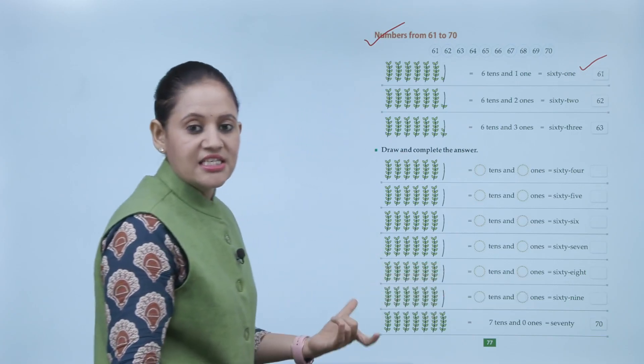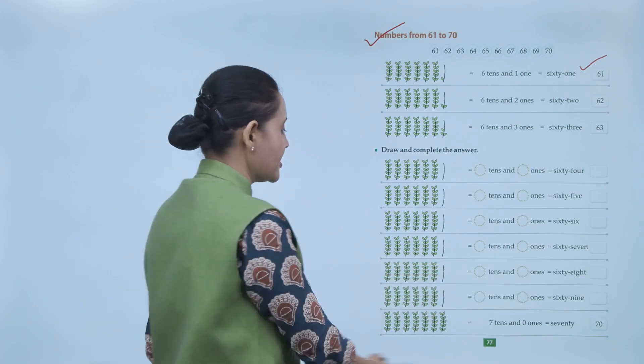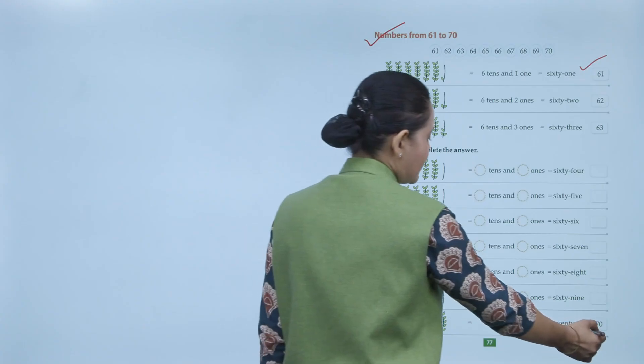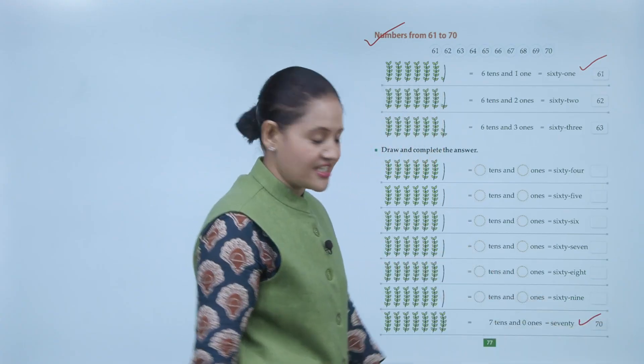Then comes 70 — meaning 7 tens and 0 ones — spelled S-E-V-E-N-T-Y, written as 7-0, which is 70.